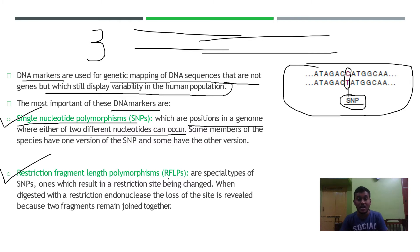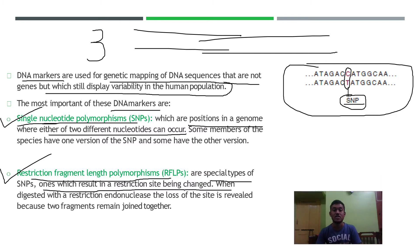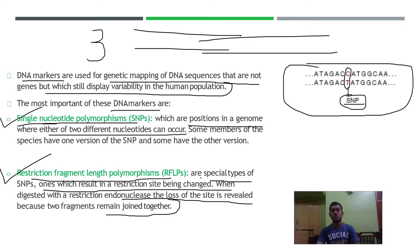The second type of DNA marker is RFLPs, which stands for Restriction Fragment Length Polymorphism. These are special types of SNPs that result in a restriction site being changed. When digested with restriction endonuclease, the loss of the site is revealed because the two fragments remain joined together.